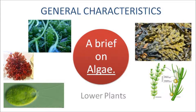Hello everyone. Today we are going to talk about general characteristics, which is a brief on algae, which is a class of lower plants. In this image you can see on your right there is Fucus — the upper image — and the lower image is Chara. On your left is Chlamydomonas and Irish Moss. So let's begin.